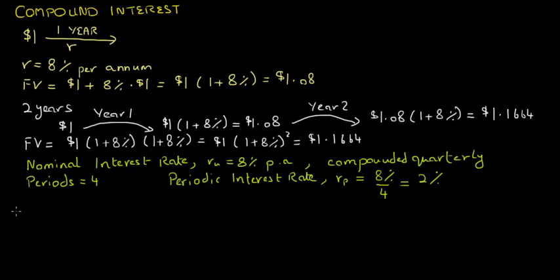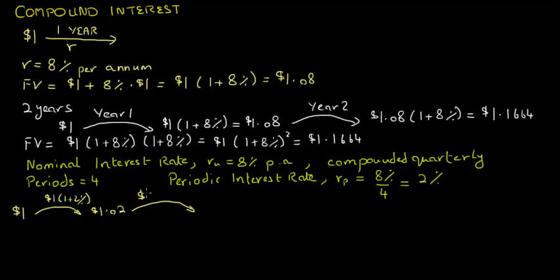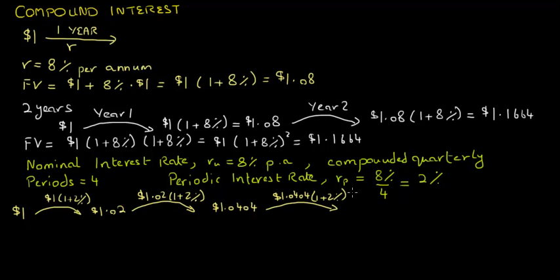So if you deposit $1 into a bank account for a year and the bank pays a nominal interest rate of 8% per annum with quarterly compounding, at the end of the first quarter the deposit is worth $1 times (1 + 2%), which equals $1.02. In the second quarter, the interest applies to $1.02, growing by another 2%, so at the end of the second quarter the deposit is worth $1.04. Similarly, at the end of the third quarter, the deposit grows by another 2%, becoming $1.0621.